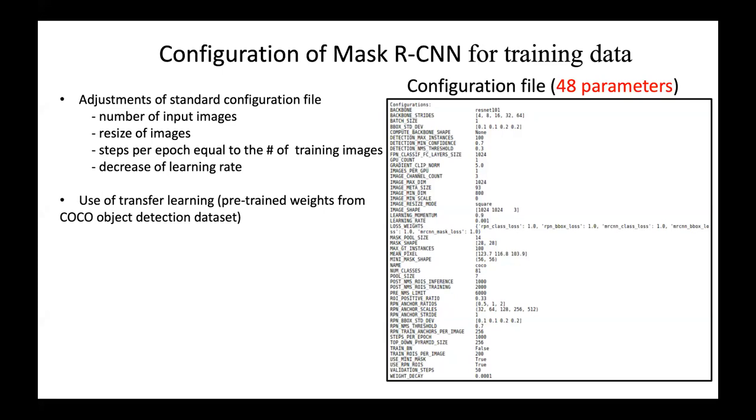Finally, we can decrease the learning rate. Typically the way that these networks converge on their weights is through gradient descent. And so by lowering the learning rate, you can avoid kind of bouncing around that minimum.